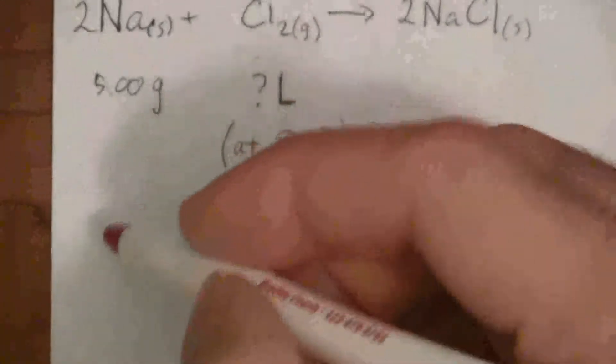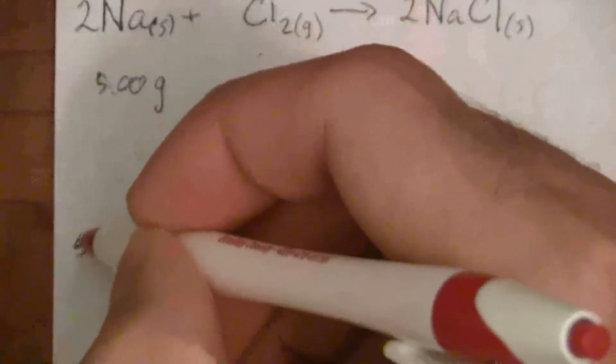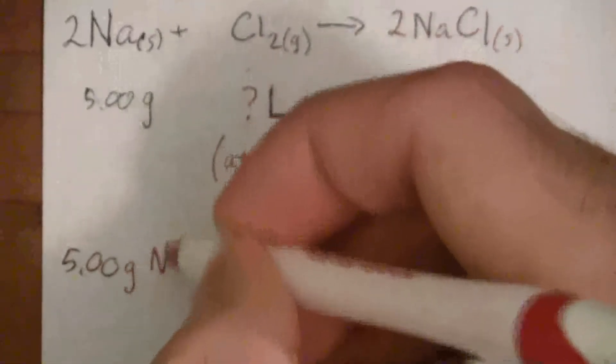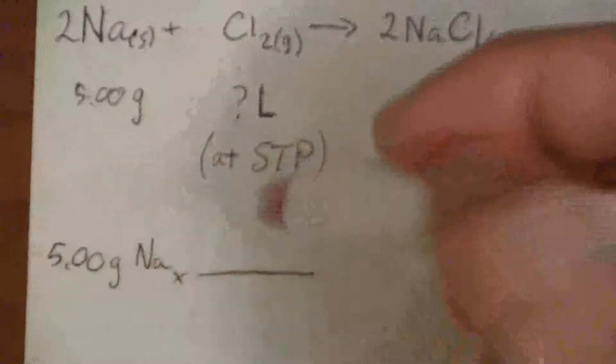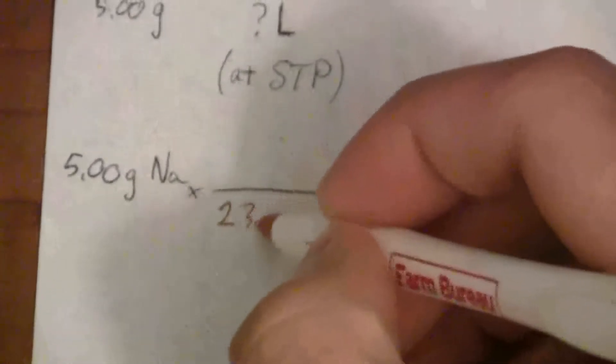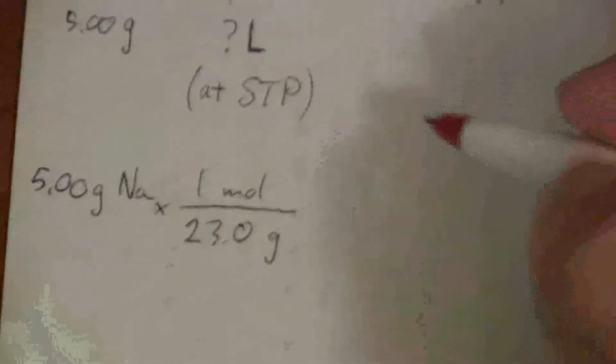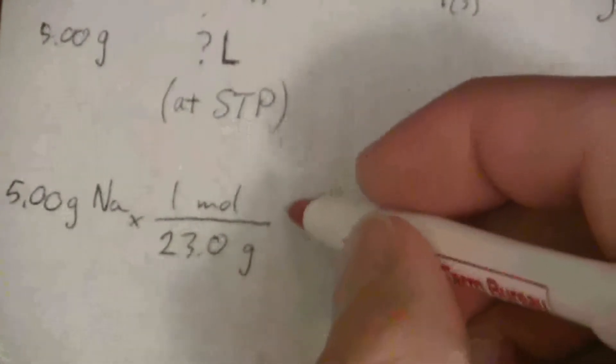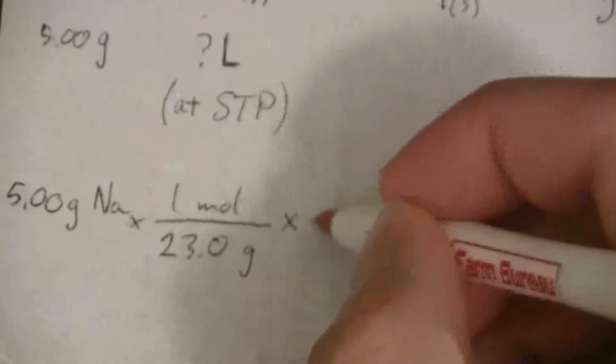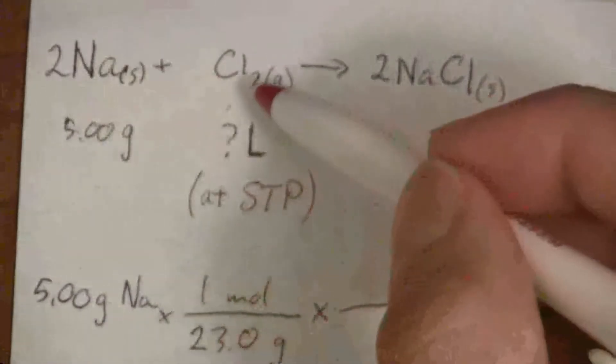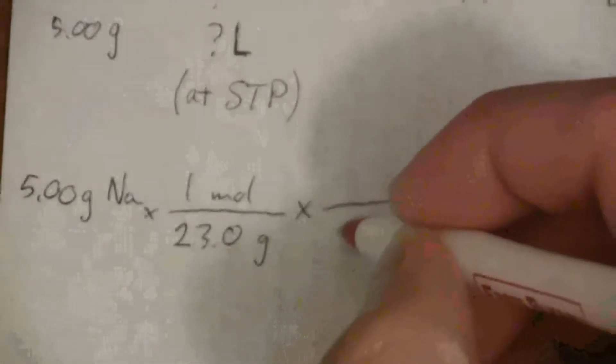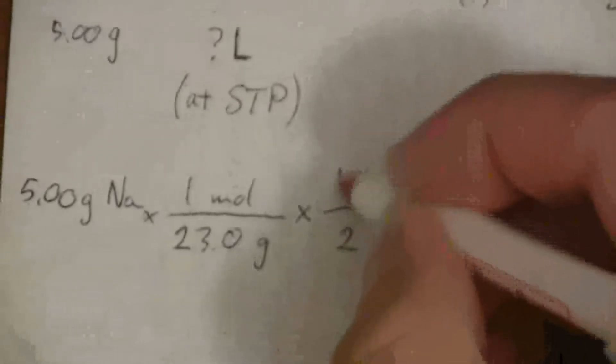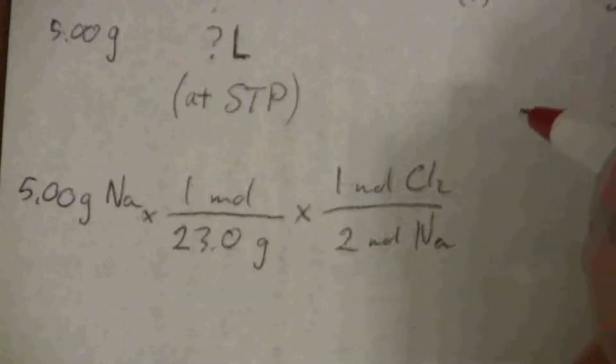I'll go ahead and work this one out. So we have 5.00 grams of sodium metal. And then, our first step is to convert that to moles using the molar mass. And for sodium metal, it is 23.0 grams to 1 mole. And next, I have the mole ratio, which is a 2 to 1 mole ratio: 2 moles of sodium to 1 mole of chlorine gas.